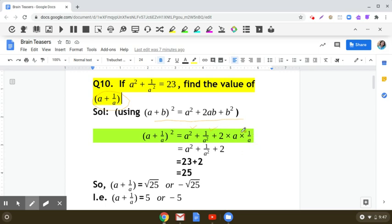Now observe the third term, 2 × a × 1/a. We can cancel a in the numerator and the denominator. And we are left with a² + 1/a² + 2.